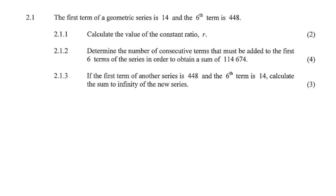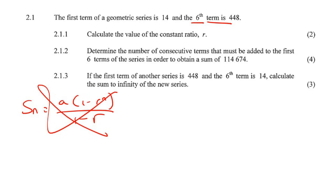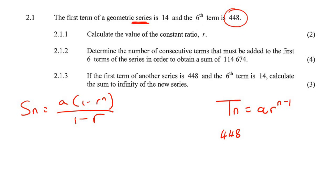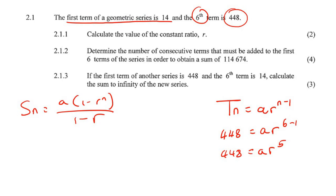So what we can do is use the T_n formula for geometric sequences, because they're referring to a specific term. They're saying the sixth term has a value of 448. So we substitute: a is the first term which is 14, and n is 6 so the exponent is 5. Now I'm going to divide both sides by 14, and we get 32.